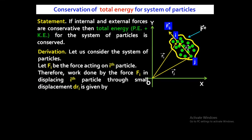We have to derive and prove that the total energy is conserved for the system of particles. Let us consider the system of particles. This i-th particle — suppose the force acting on the i-th particle is F_i. The force acting on the i-th particle is F_i, on the j-th particle is F_j, and the internal force acting between the i-th and j-th particle is F_ij — the internal force on the i-th particle due to the j-th particle.